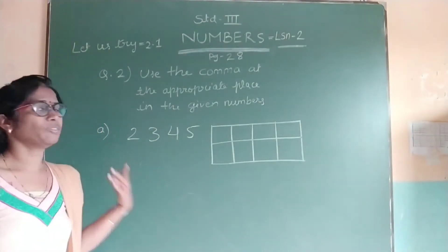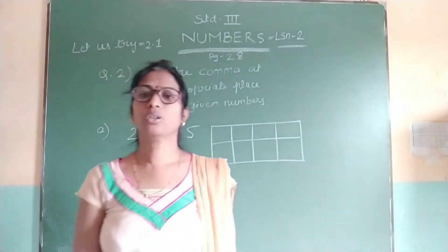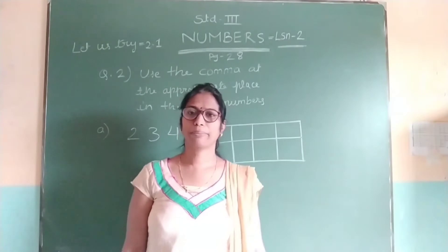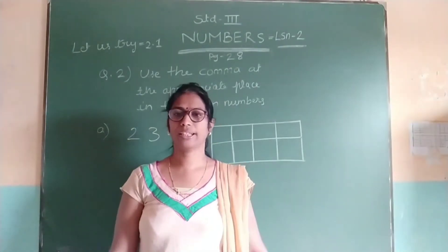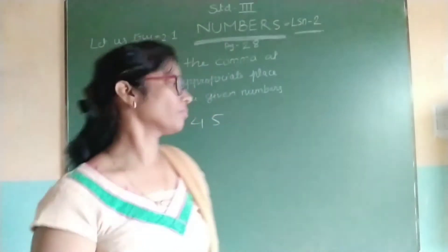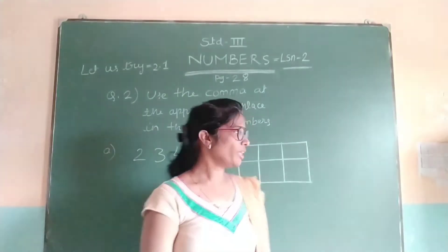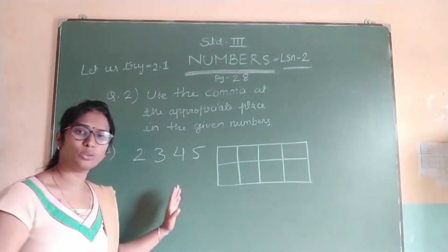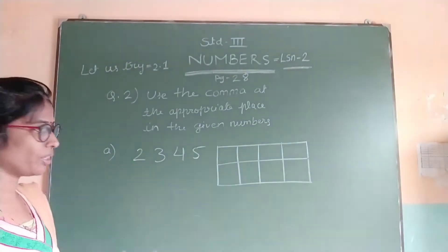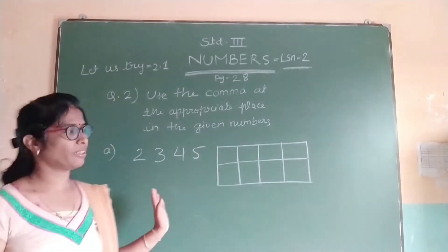First we will see what a comma is and where to place it. A comma is placed in a 4-digit number to separate 2 periods, that is the 1s period and the 1000s period. A 4-digit number is divided into 2 periods.